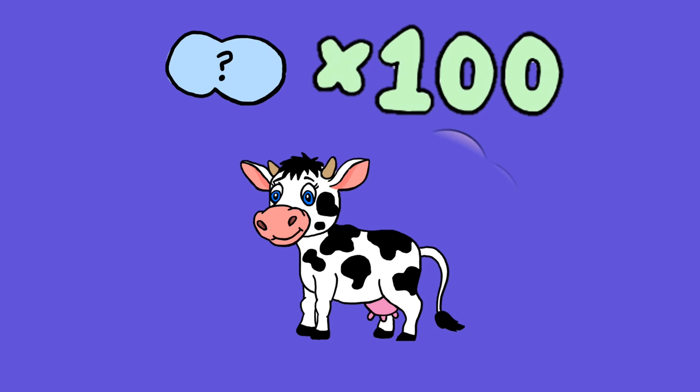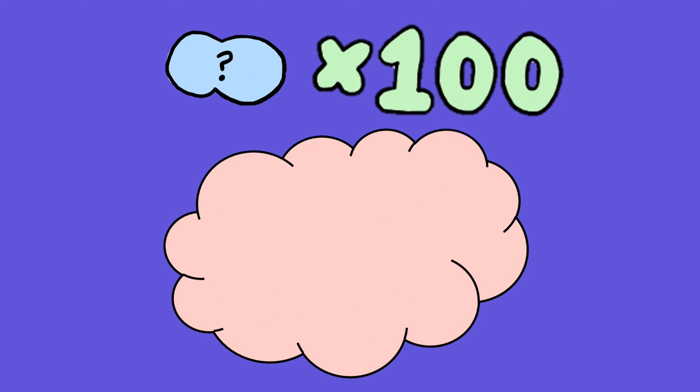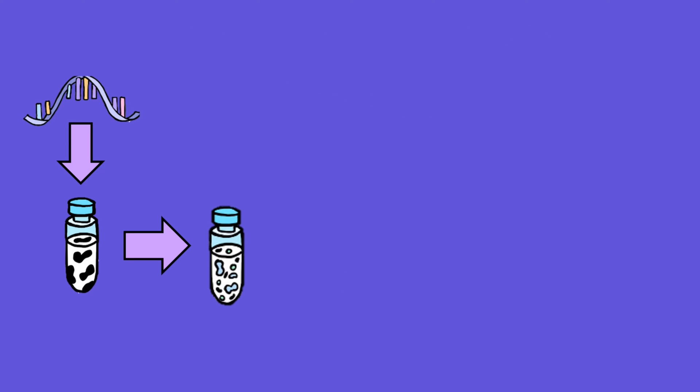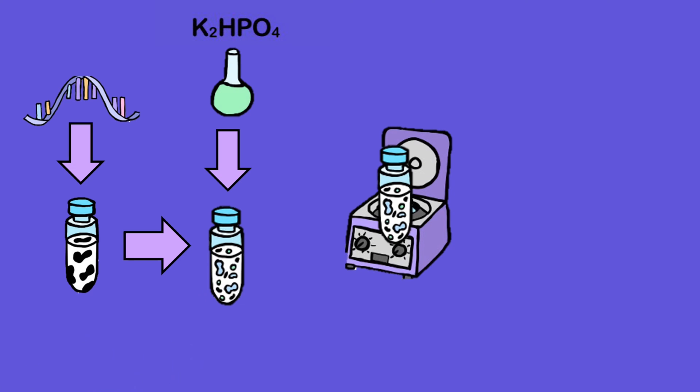They isolated and purified the enzymes a hundredfold, enhancing their synthesis capability for polynucleotides from calf thymus nuclei extracts. After, they prepared RNA from a crude enzyme solution, carefully adjusting pH levels using a potassium phosphate buffer for the perfect environment and employing centrifuge methods.